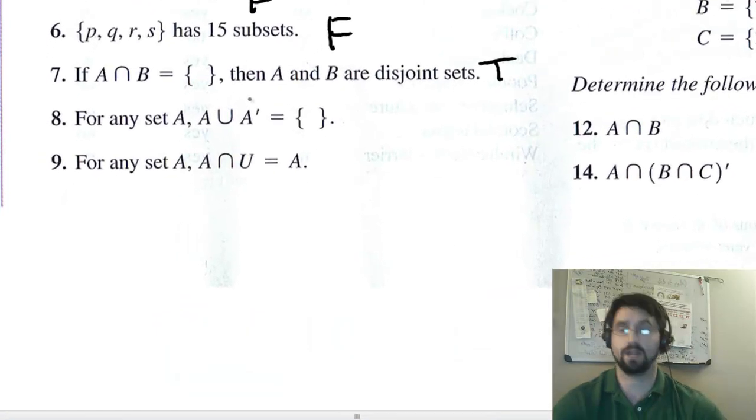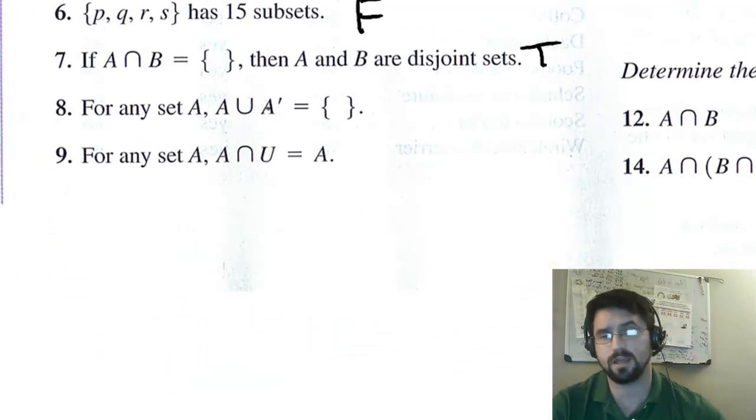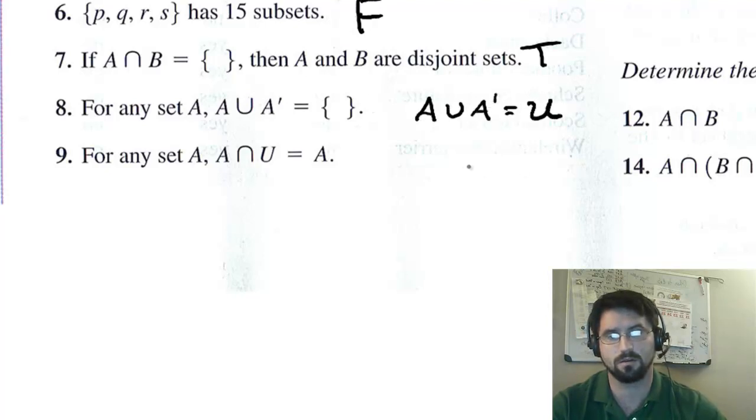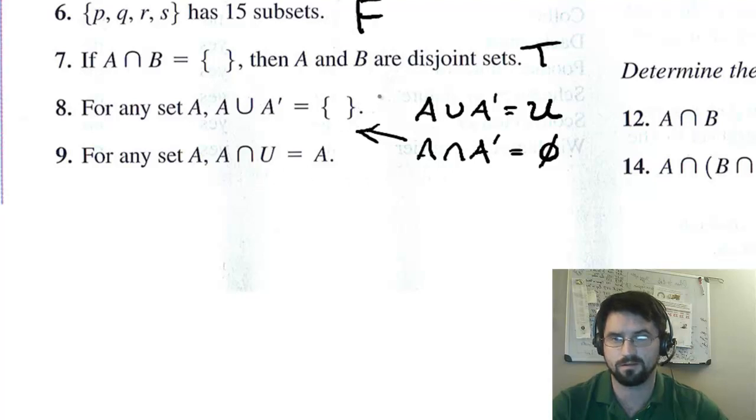Scroll down. So for any set A, A union A complement is empty. No. A union A complement is the universe. Remember, to unite. The union means put them together. If you put A together with A complement, then you're going to get the whole universe, because the complement has everything that's not in A, so they complete each other. If this had said instead, A intersect A complement, then the answer would have been the empty set. So this is false. And this number 9, for any set A, A intersect the universe is A. That is true, because where does A overlap the universe at A? Okay.